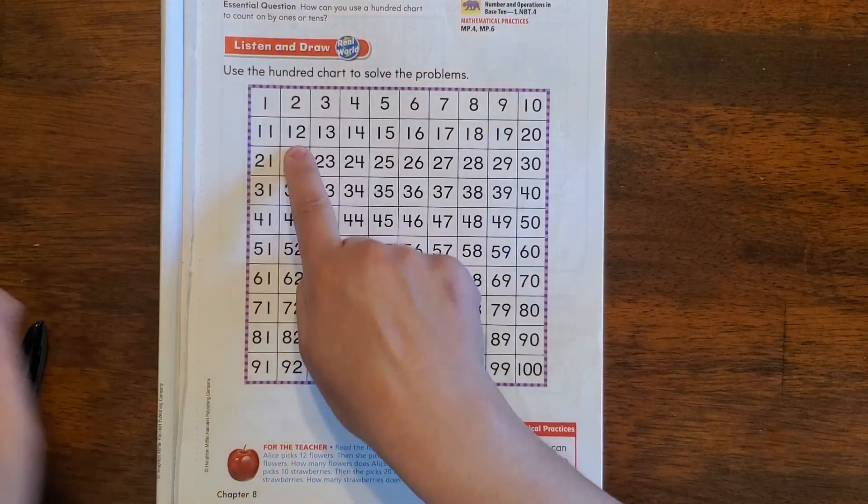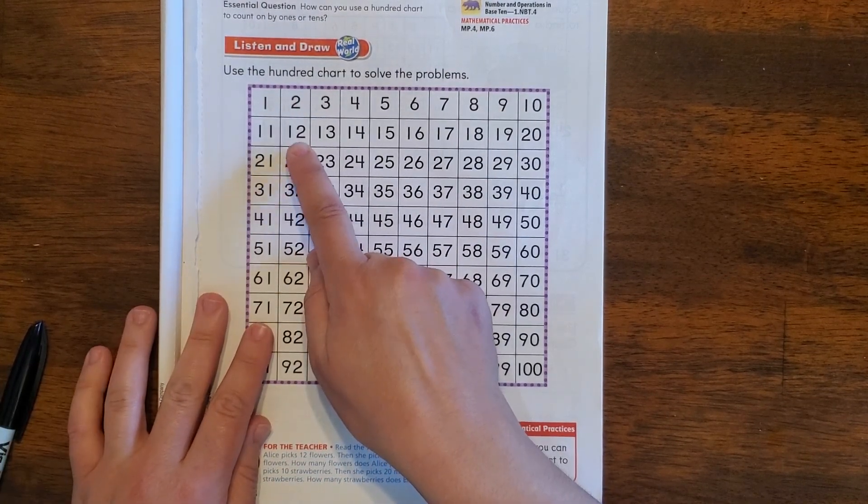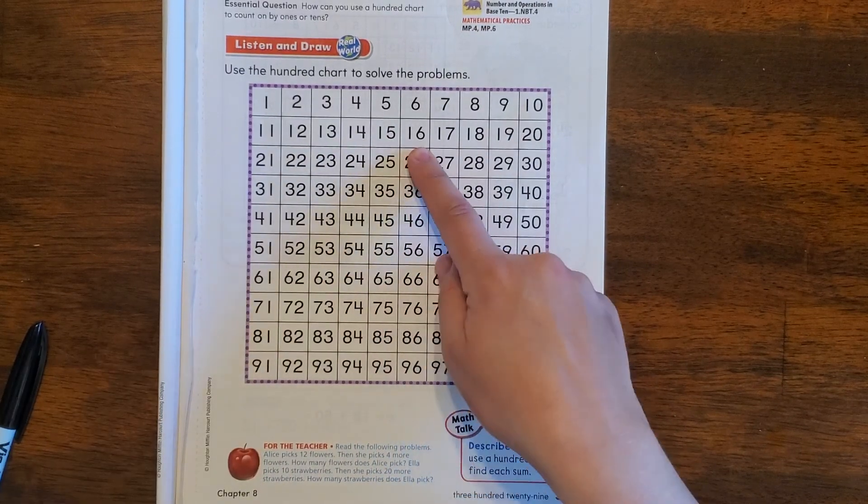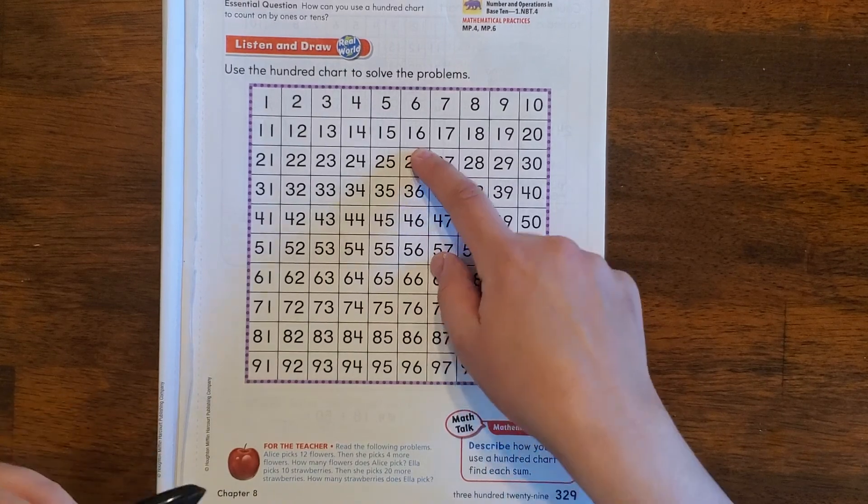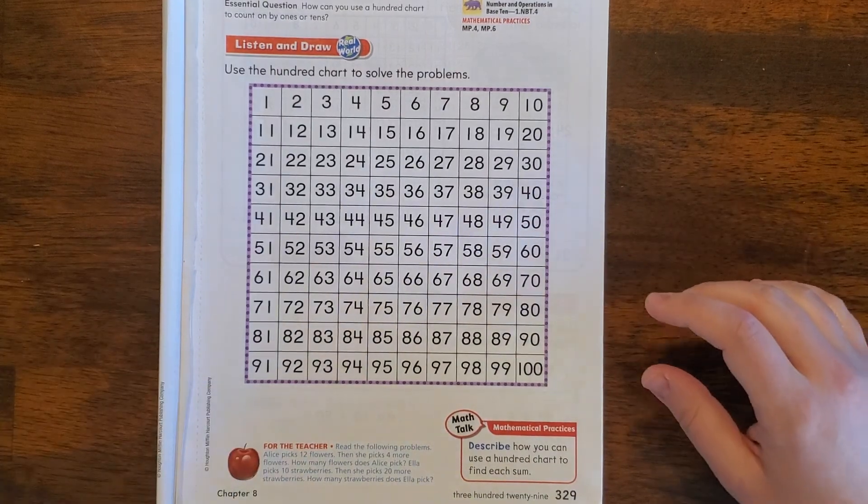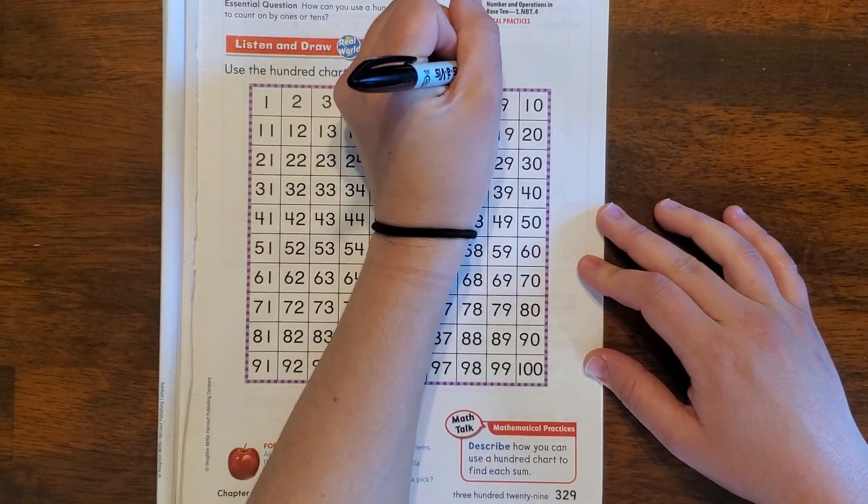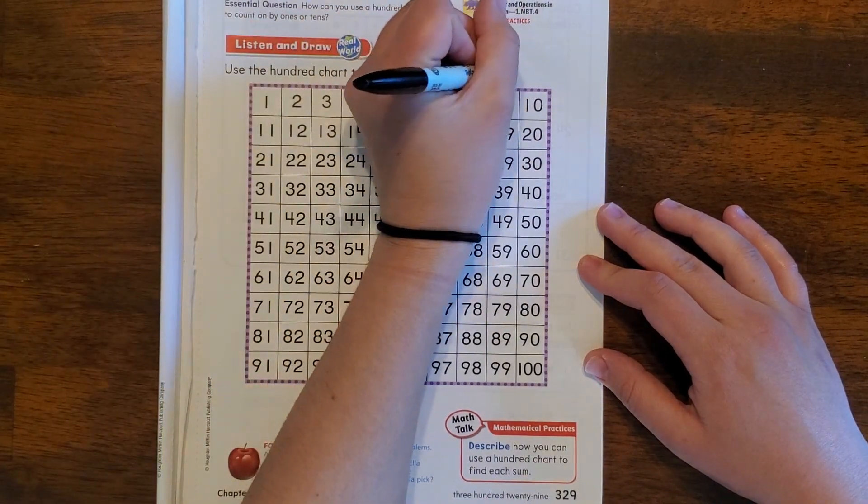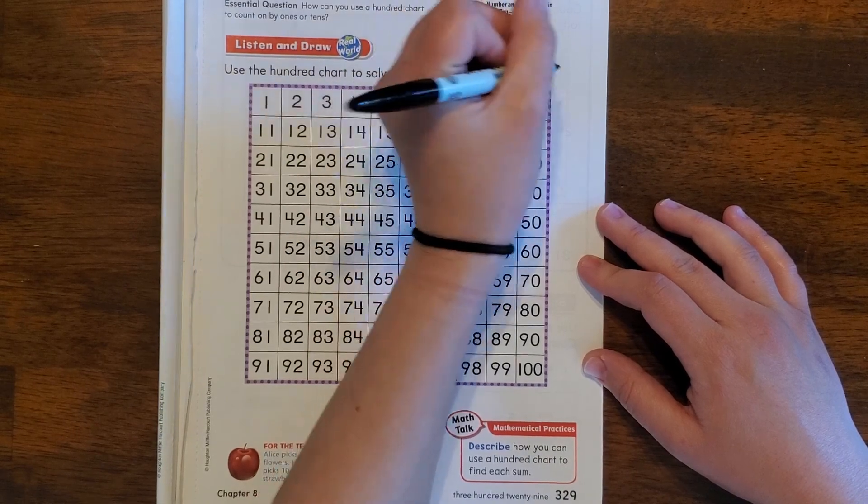Then she's going to pick four more flowers. How many flowers does Alice pick? So if I start here at 12 and she's going to have four more, I'm going to go four more: 1, 2, 3, 4. Where do I land? I land at 16, so Alice picked 16 flowers. Let's put that into an addition sentence. She started with 12 flowers, then she picked four more, so she added, and then she had 16 flowers all together.